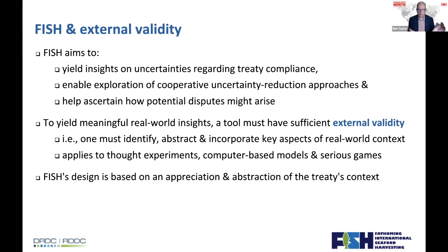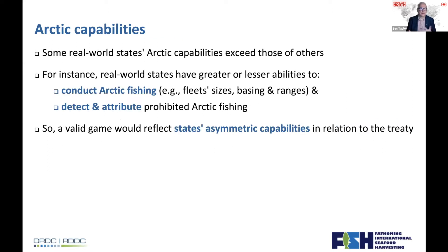We start by understanding what it is we're modeling — very basic stuff: understand what you're modeling, define it, move forward. The first things to consider are the capabilities different nations have. Different countries have the ability to fish in the Arctic, and also the ability to detect what's going on — they have navies, coast guards, and satellites supplying the area. We need to reflect that different people have got different abilities.